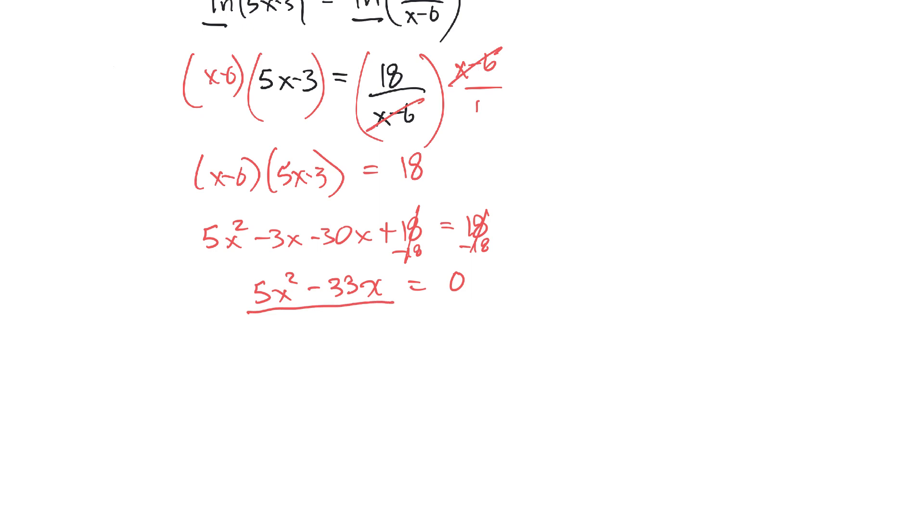Since I've lost my constant term, I'll just take out a common factor of x. So I'll factor out x equals 0. Now I have two things that multiply together to give 0.